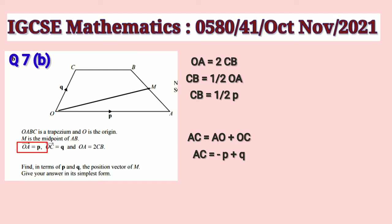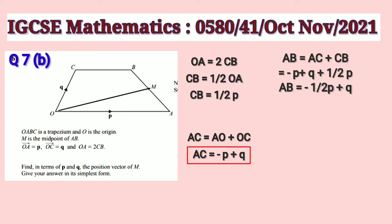Let us find AB now. AB is equal to AC plus CB, but AC we got minus P plus Q and CB we have half P, so this comes to minus half P plus Q.